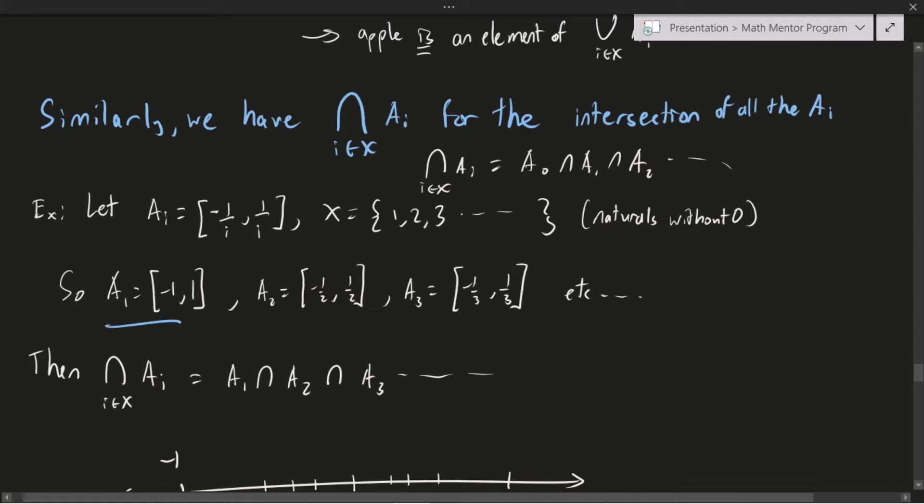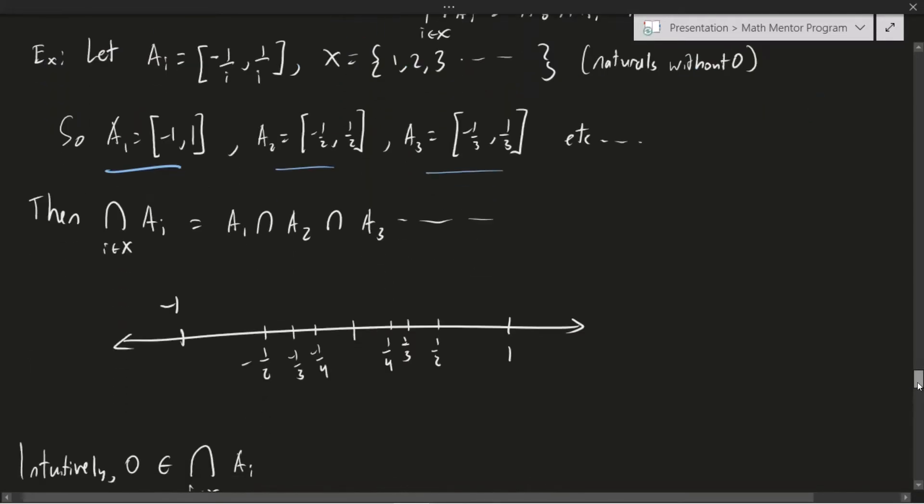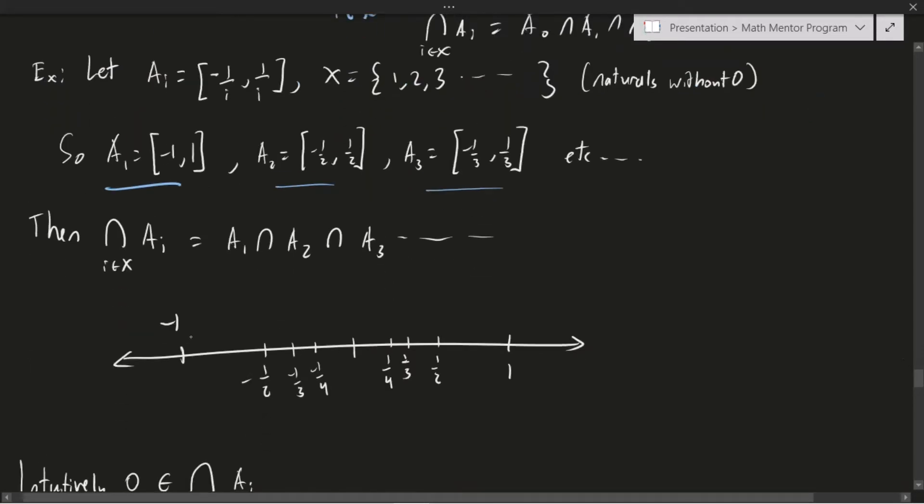My indexing set is going to be one, two, three, and so on. So all the naturals, but without zero. And so just some examples of the Ai here, I have A1, A2, and A3. Of course, this goes on. And my question now is what is the intersection of all the Ai? How can I describe that in a better way? So just to give you a picture here, the first set, A1, is going to look something like this. It's the closed interval, remember, so it contains one and negative one. But the next one, A2, so maybe I'll just write it down here, A1. The next one is A2. And it goes up until here. And the next one is A3. And the next one's A4. And we could keep on going, right? These are just going to get smaller and smaller and smaller.